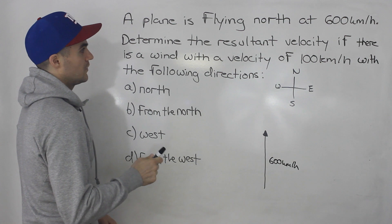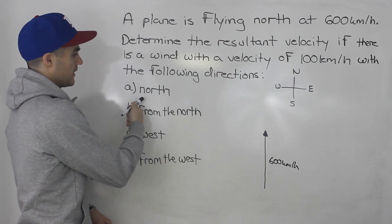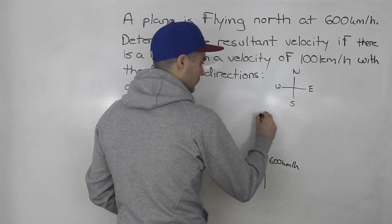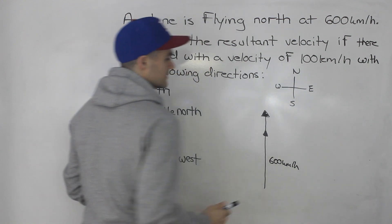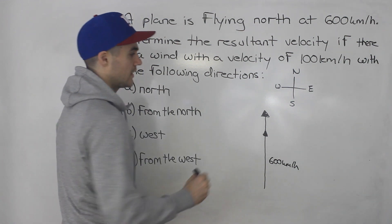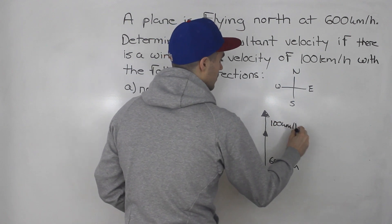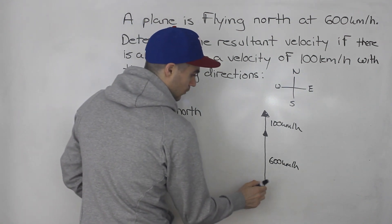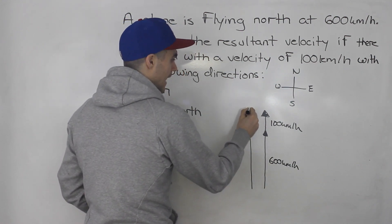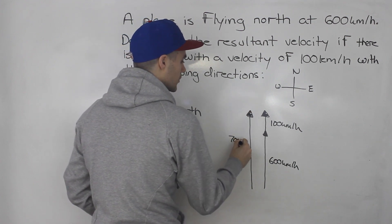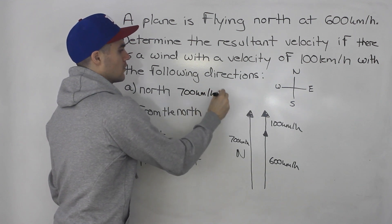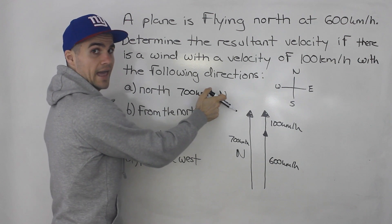It encounters a wind with a velocity of 100 kilometers per hour, and in part A the wind is also going north. The wind is going to help the plane gain more speed because it's going in the same direction, so you can just add the wind vector right on top of the plane vector. This wind vector is 100 kilometers per hour. With the plane going 600 plus the wind's 100, the resultant velocity is 700 kilometers per hour north. Remember, they're asking for a velocity, so you need both speed and direction.